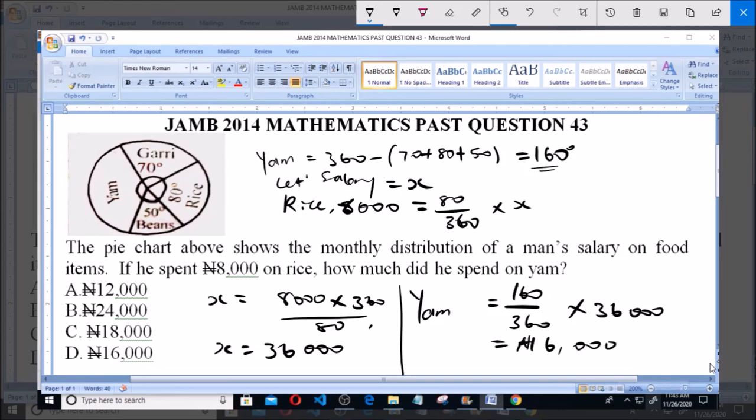16,000 Naira, because 36 here we cancel 36, zero we cancel zero. Now 160 times this will give us 16,000 Naira, and that is option D.